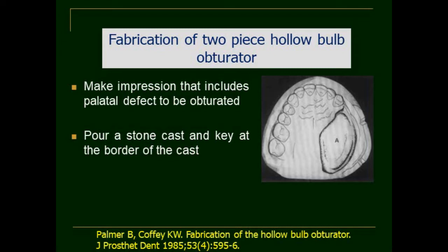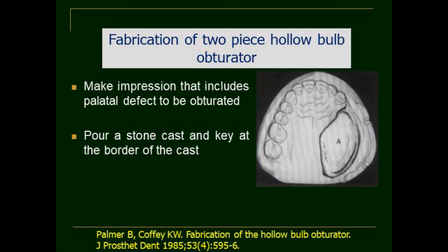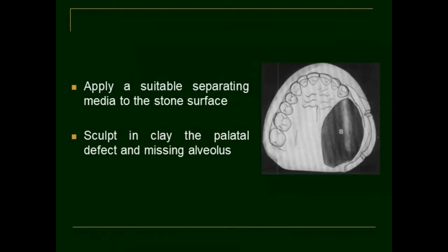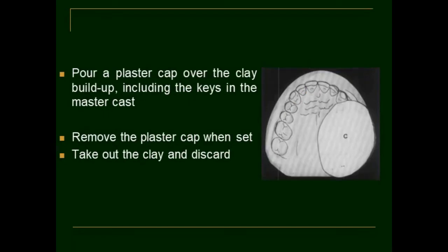In Palmer's method, first make an impression that includes the palatal defect to be obturated. Then pour a stone cast onto the impression. A key is made at the border of the cast. After the cast and key are made, apply a suitable separating media to the stone surface and sculpt clay into the palatal defect as well as the missing alveolus. Once the clay is sculpted into the defect, pour a plaster cap over the clay buildup. This plaster cap should include the keys made in the master cast. Once set, remove the plaster cap, take out the clay and discard it. You now have a plaster cap of the defect.